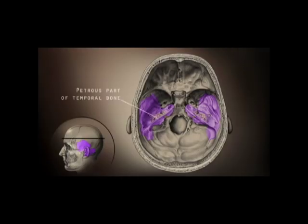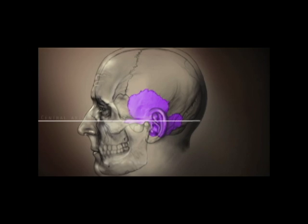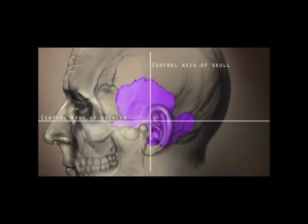Buried deep in the petrous part of the temporal bone lies the hearing organ, the cochlea. Its central axis is horizontally oriented in relation to the axis of the skull.